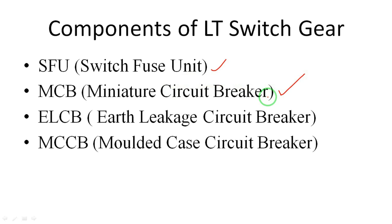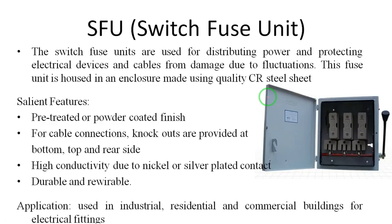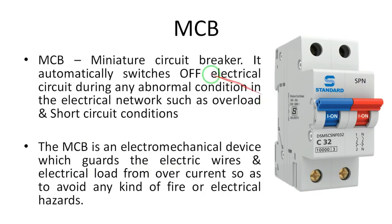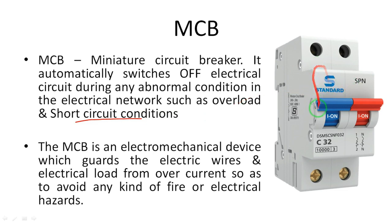Now we are discussing the second switchgear component: MCB. MCB means miniature circuit breaker. This device automatically switches off the electrical circuit during any abnormal condition. Abnormal condition means overload or short circuit conditions. In case any short circuit occurs in the home or in any devices in industries, this MCB automatically trips to the open or off position.